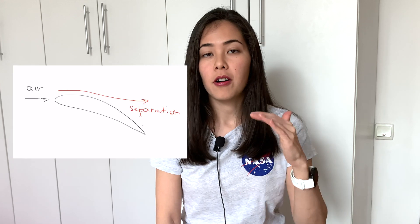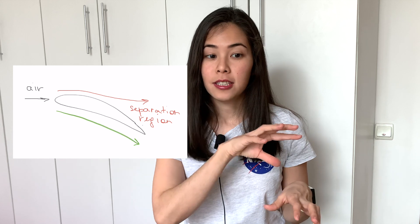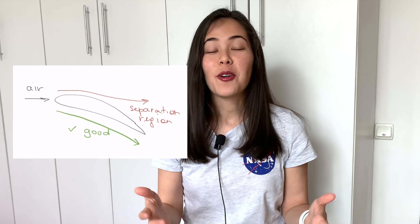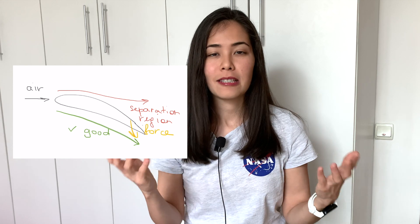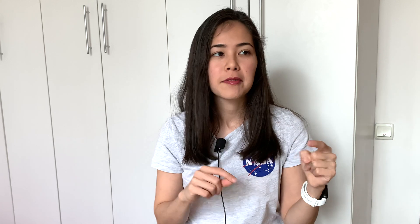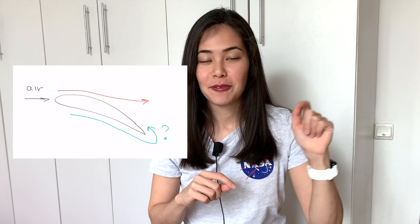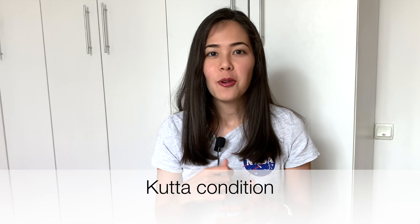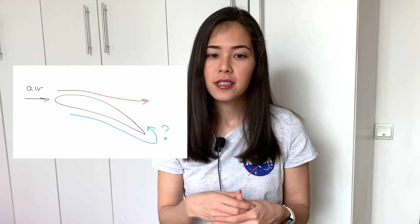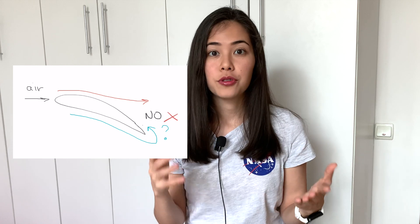Now let's talk about cases where we don't have perfectly streamlined airflow. Let's say we get a little bit of separation on top of the airfoil, but the bottom airflow is still pushed downwards, so the major direction of the airflow is still downwards and this principle still works. You might ask why the bottom airflow doesn't go around the corner to join the top — and the reason is the Kutta condition, which states that fluids cannot go around sharp corners.